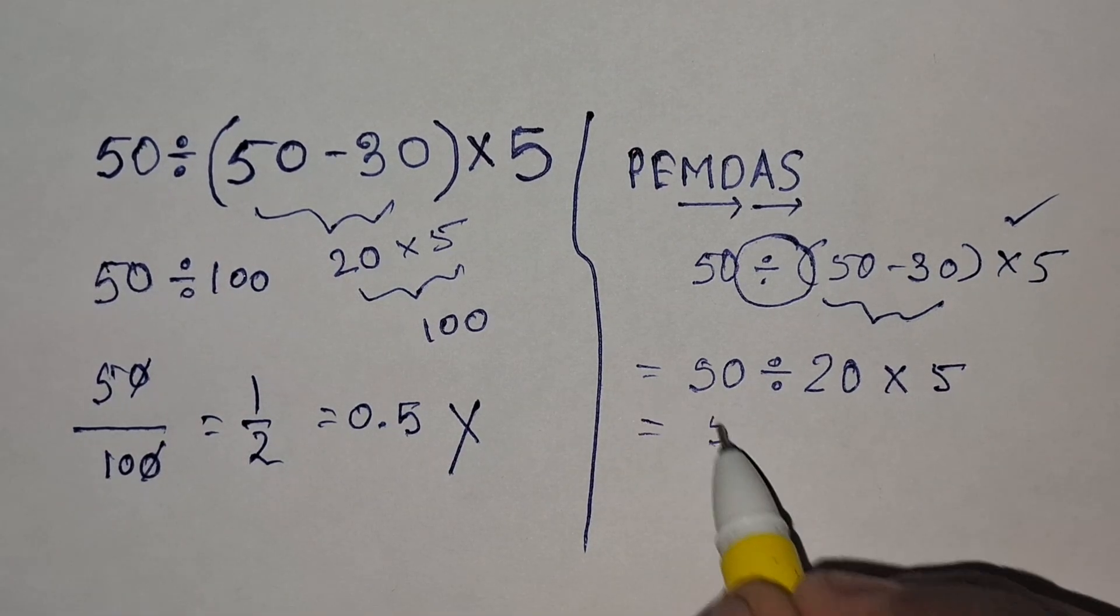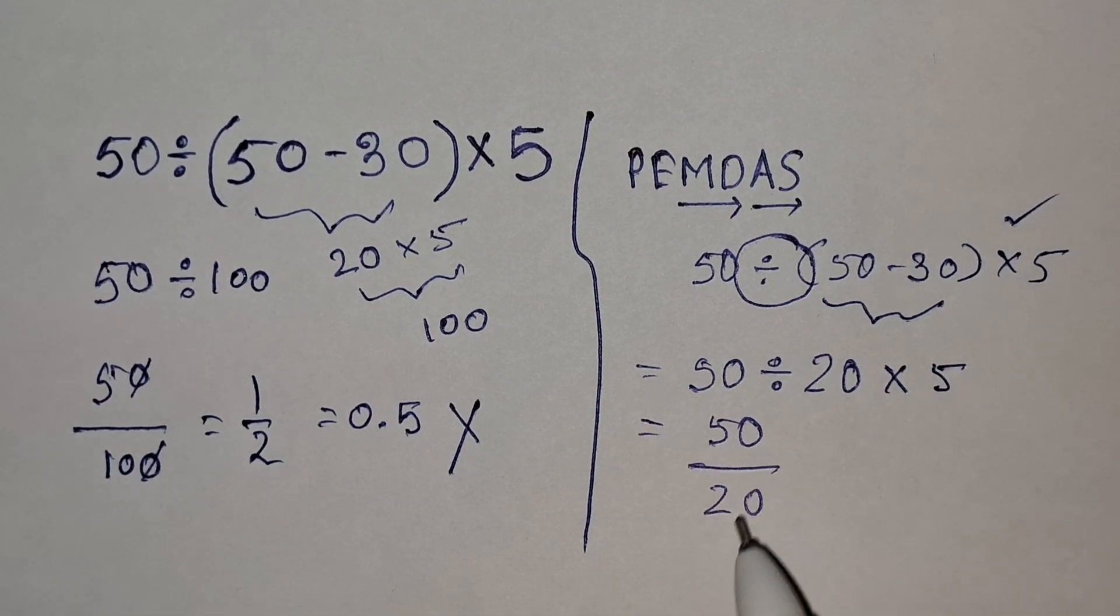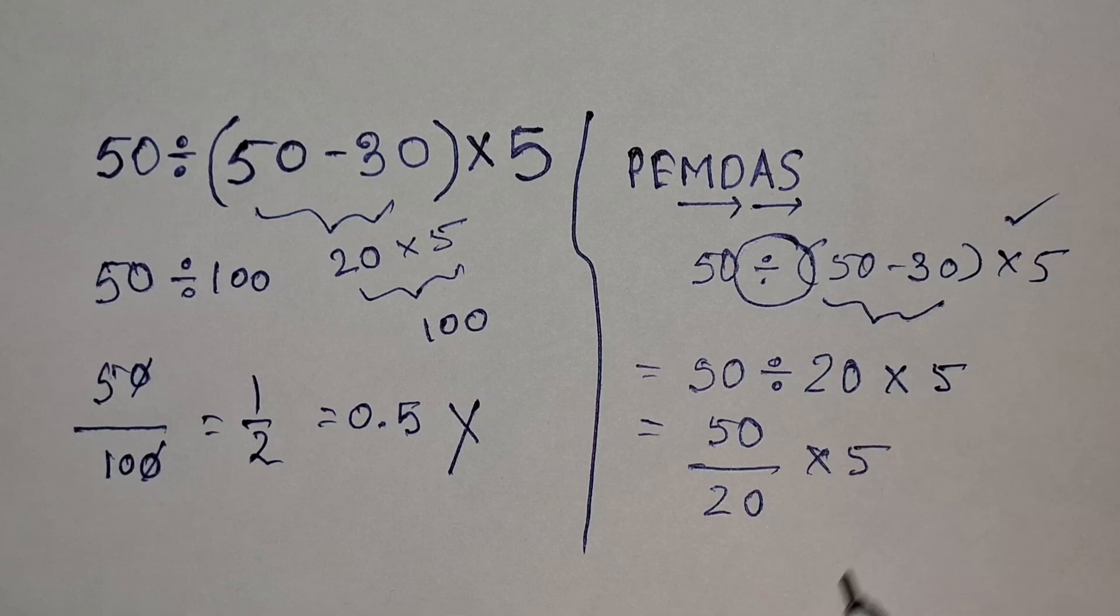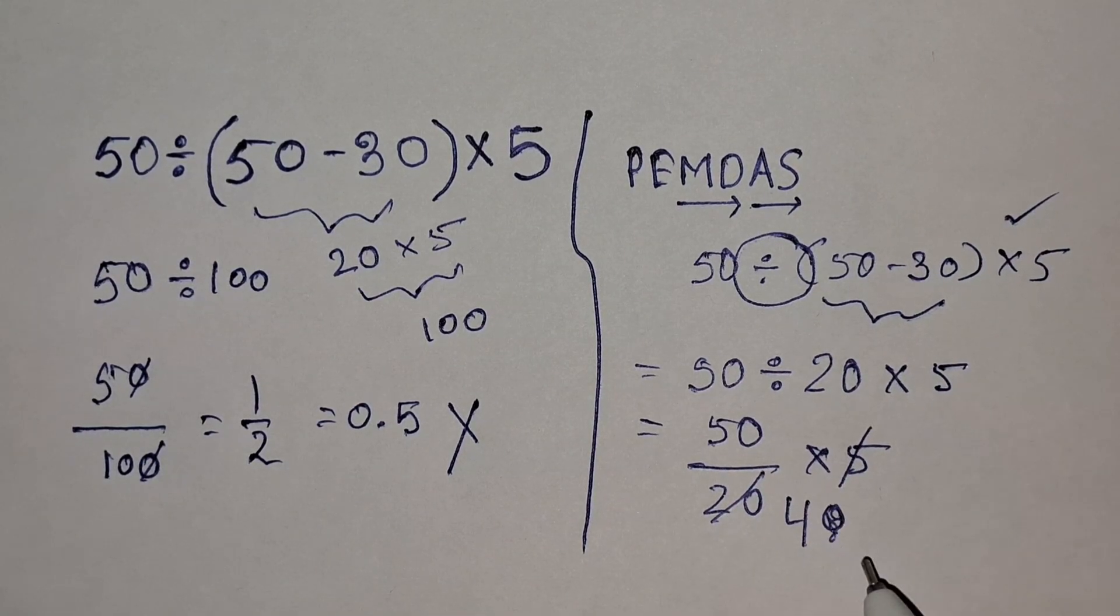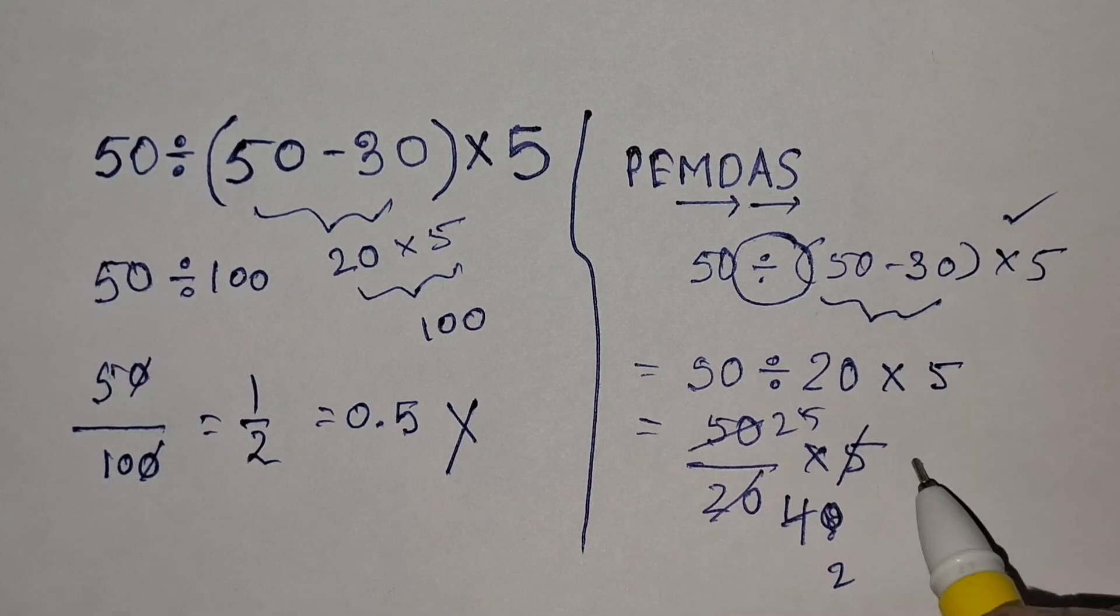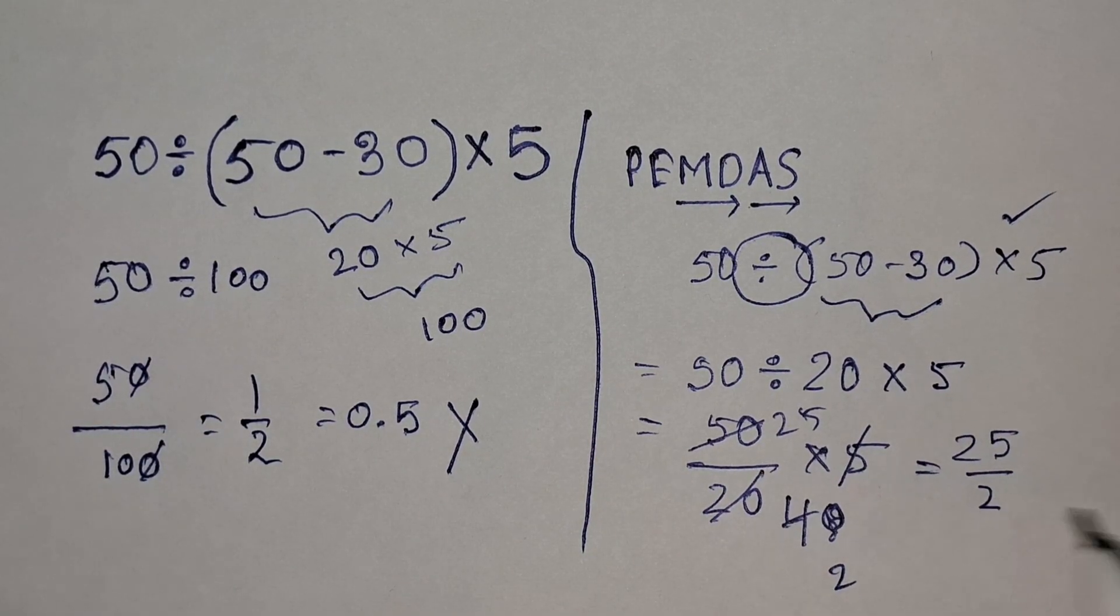We have to solve from left to right. So 50 divided by 20 times 5, canceling 5 and 20 we get 4. So 50 divided by 4 equals 25 by 2, which equals 12.5.